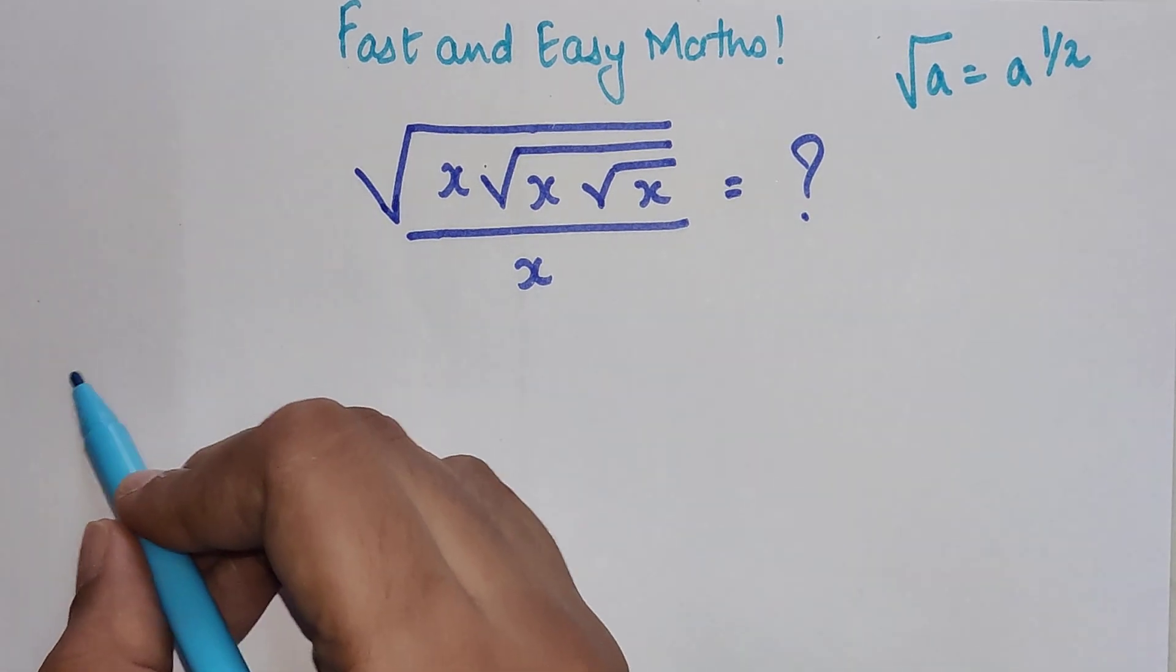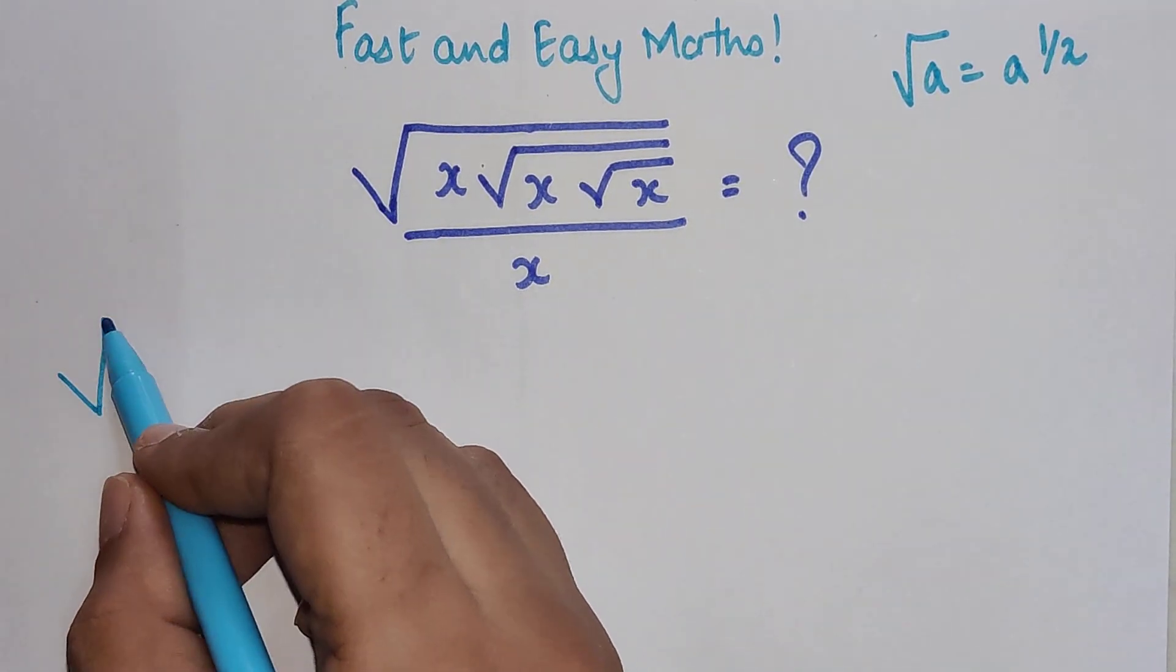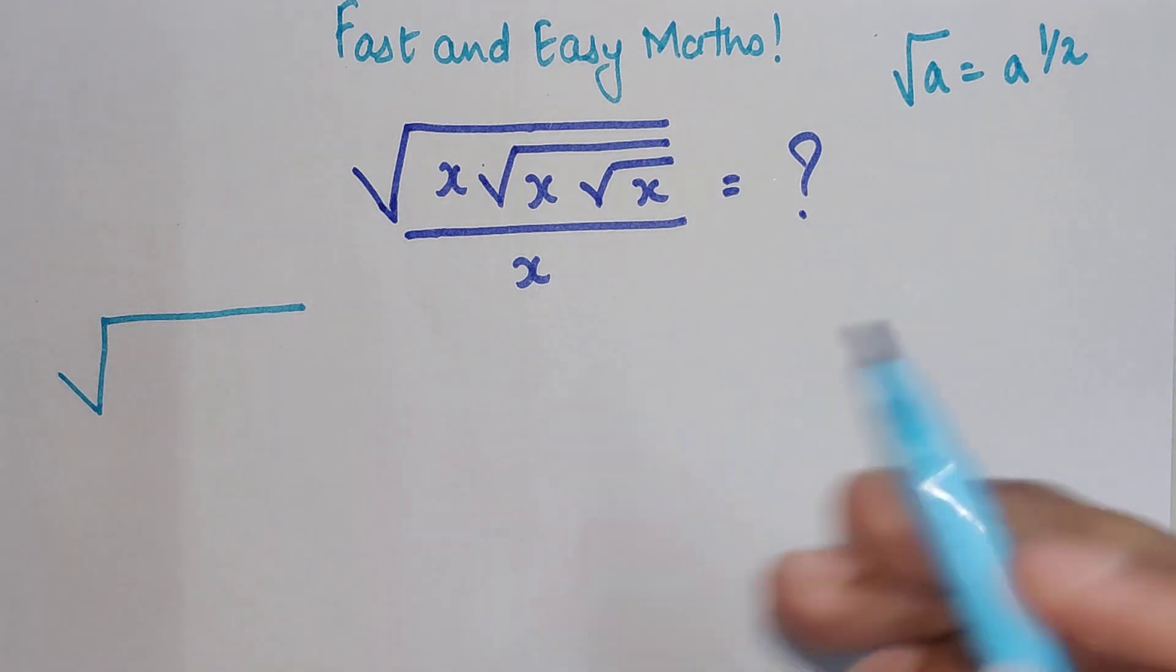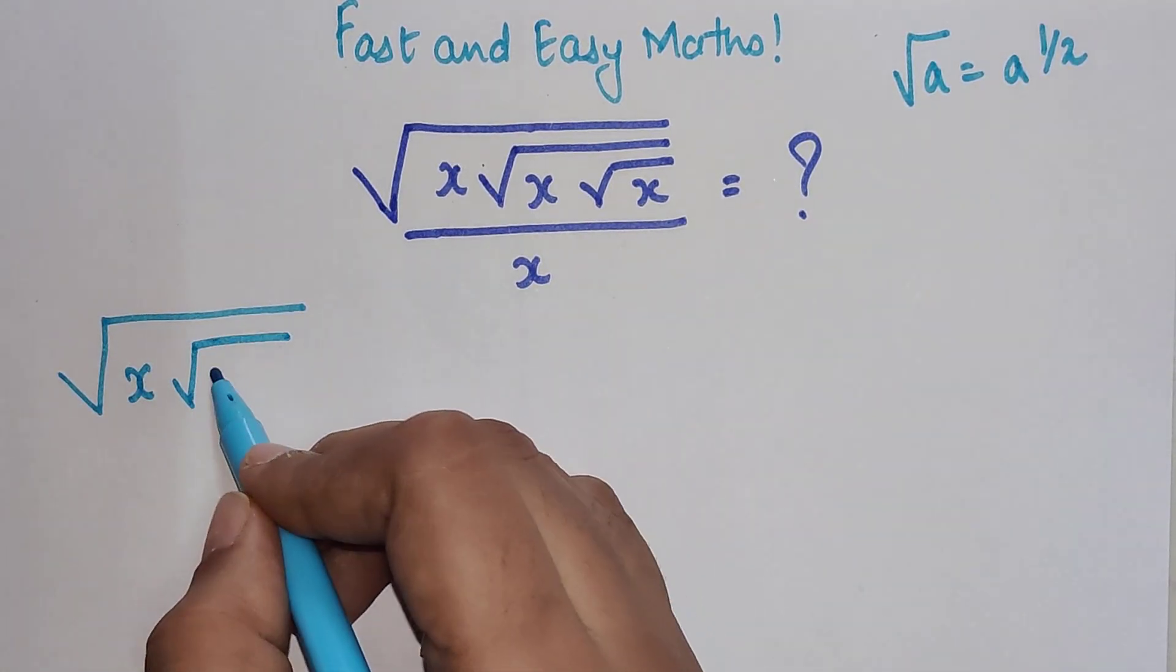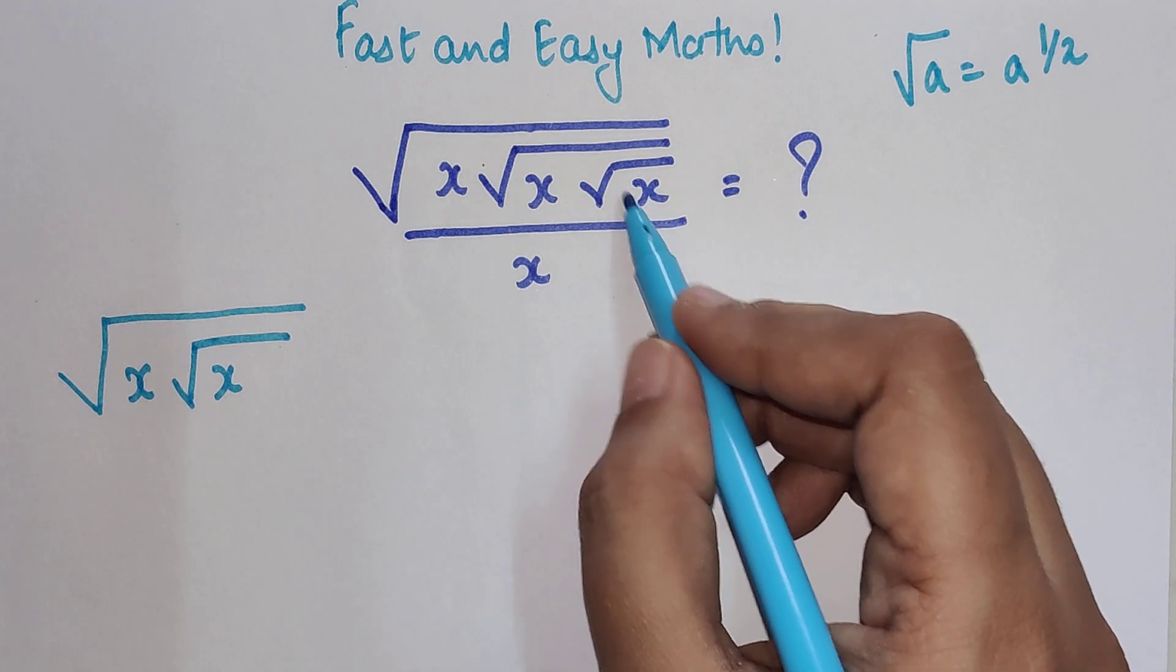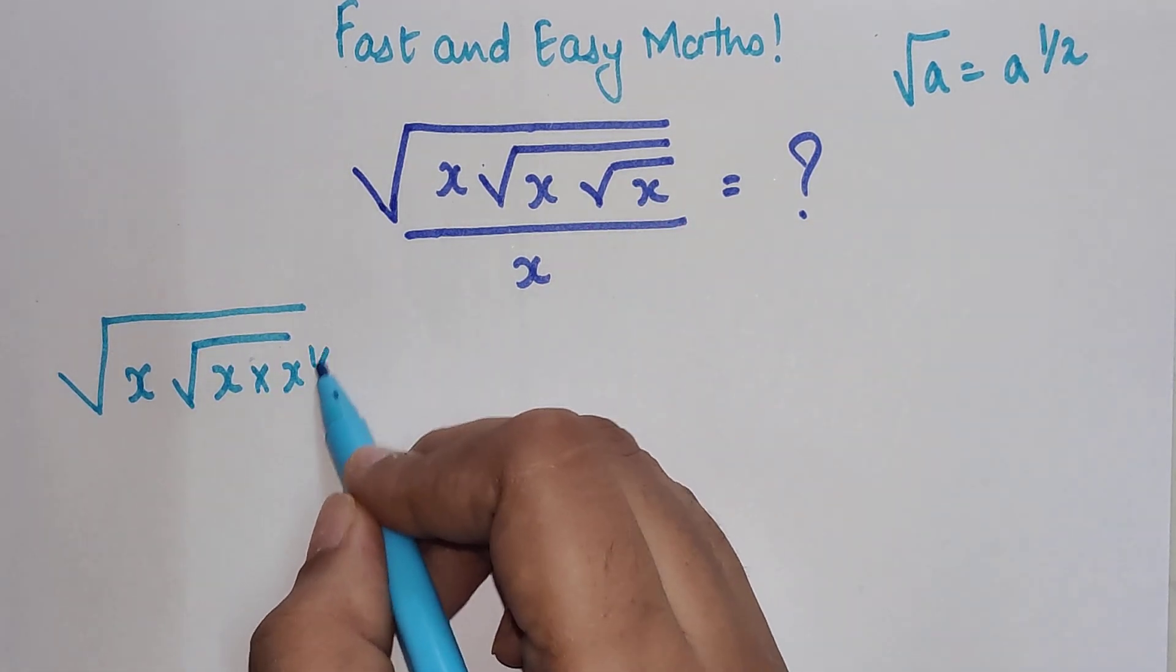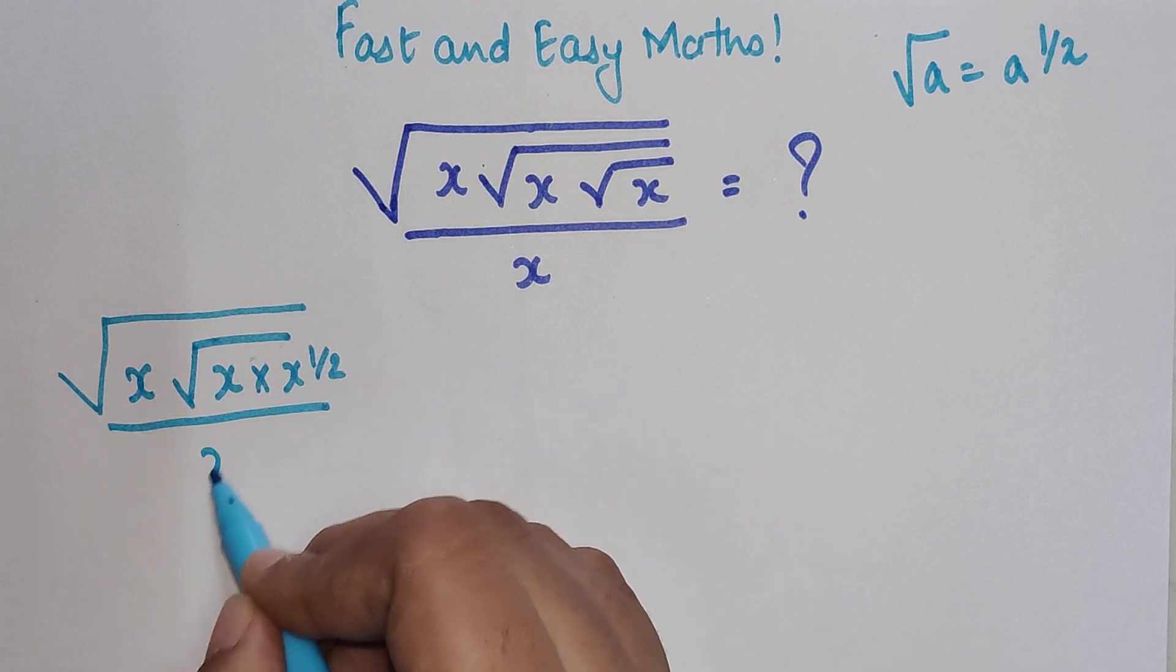So here we will start here. Please understand when you have root, root, root, you start with the innermost root. We will keep the first two roots as it is, and this root x will now be written as x raised to half upon 2.